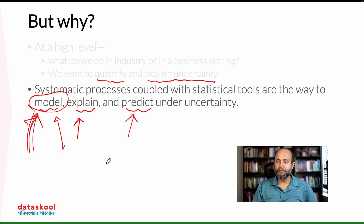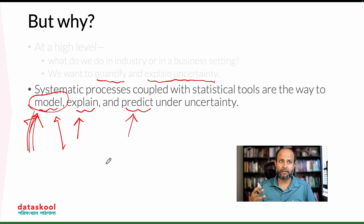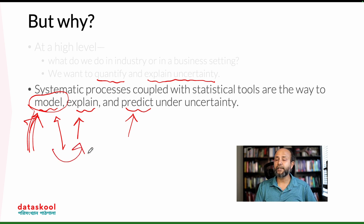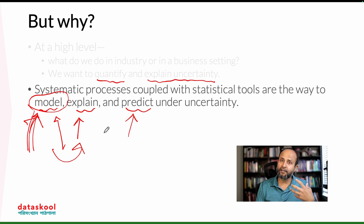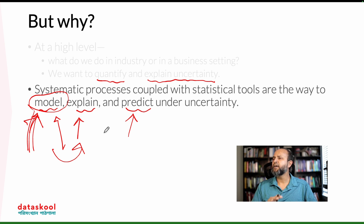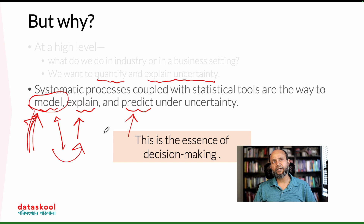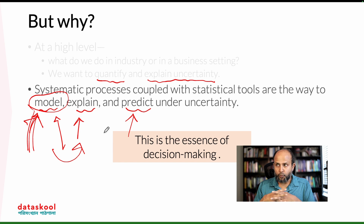What does modeling mean? We want to capture the pattern, capture the structure — that's what we call modeling. It's usually a mathematical model. Then we explain what the model is telling us, because business stakeholders need to understand what's going on. And then we use that to predict our next best action. That's the essence of decision making in industry.